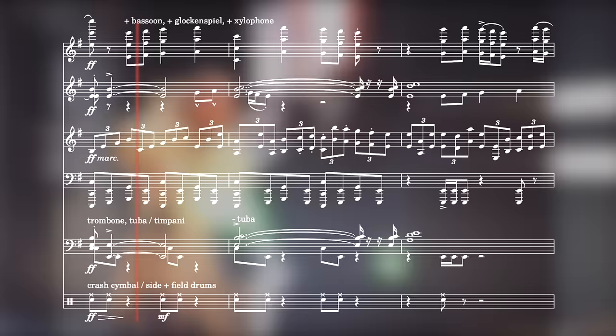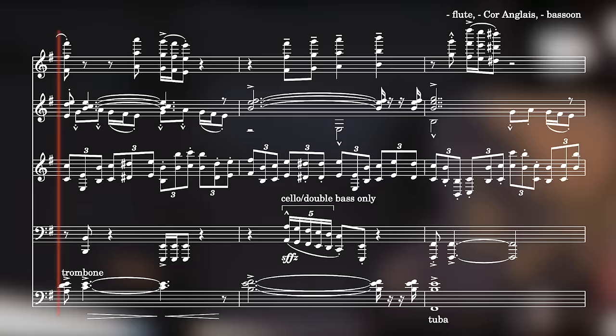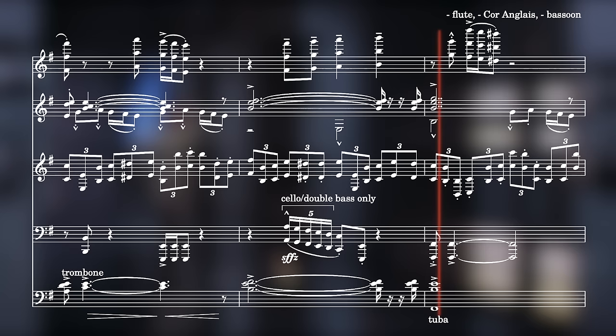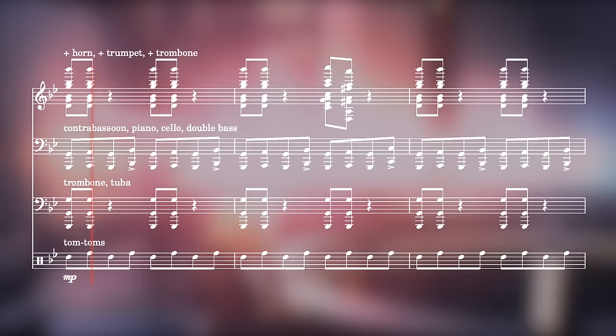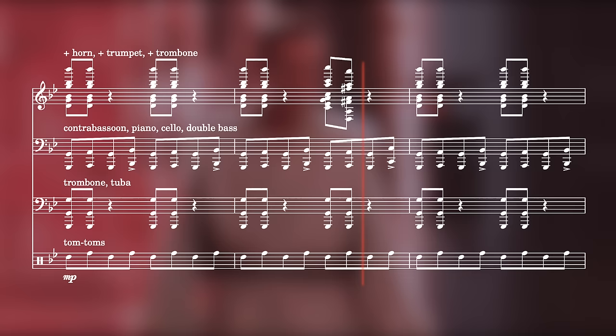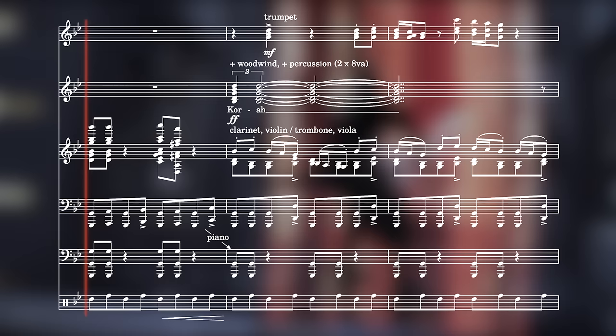It feels like it might collapse again, but before it can, rising scalic passages spread throughout the orchestra, leading to an orchestral version of the choral motif, now in G minor, followed by a reintroduction of the choral texture.